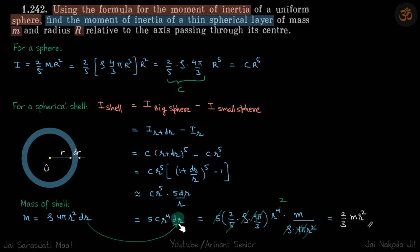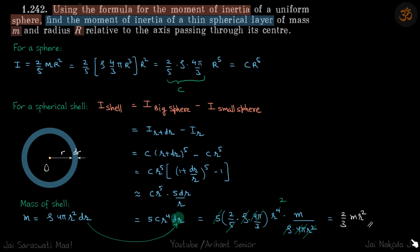Now we want to get rid of dr, so the mass of the shell is written in terms of dr: mass of the shell equals rho times 4 pi r squared dr. Substituting that in, we get our answer: 2/3 mr squared.